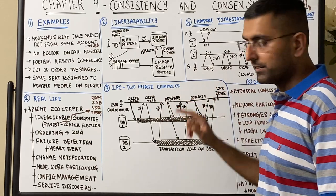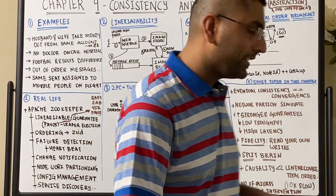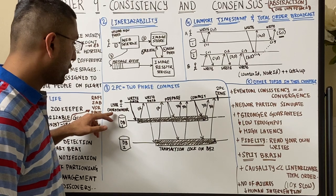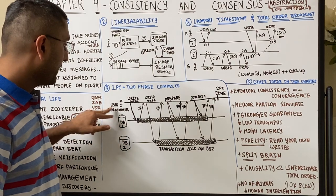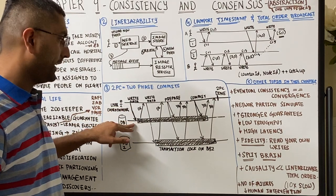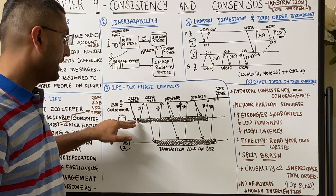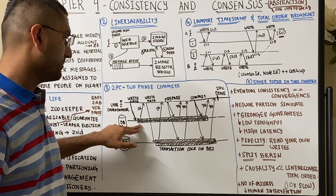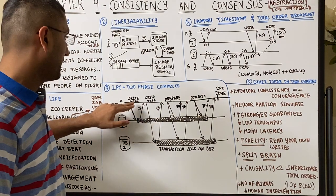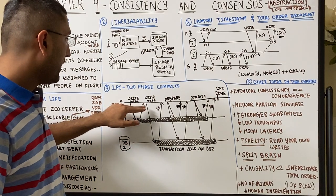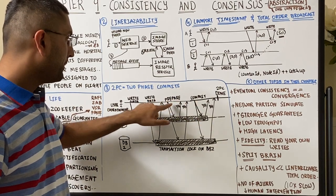For consistency you need a system that provides linear transaction ordering. The next important concept is two-phase commits — atomic commits that either go through fully or don't go through at all. Let's say you have a coordinator and two replica databases, DB1 and DB2. The coordinator says it's going to write data to DB1 and DB2. In two-phase commits, the first step tries to get a transaction lock on both replicas.